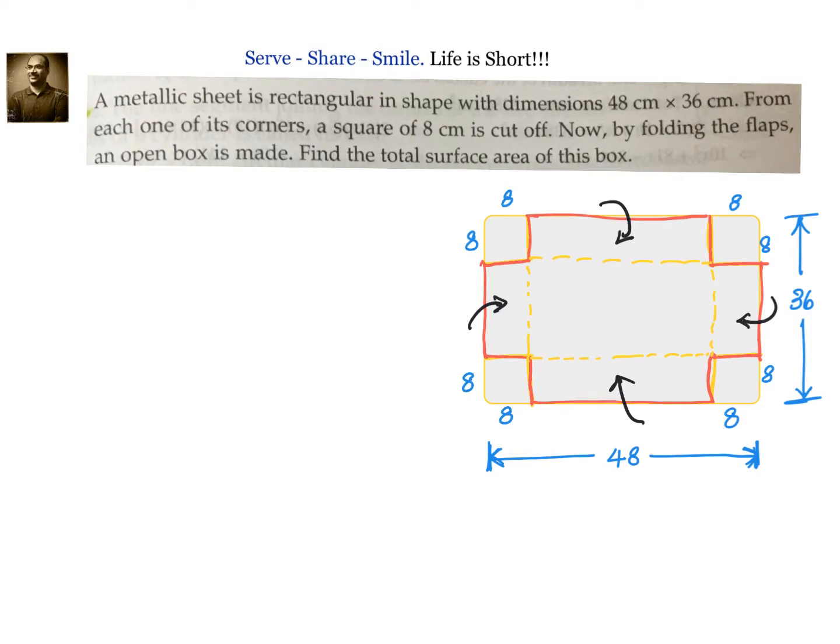What we will have is a cuboid with sides 32 because 48 minus 2 times 8 is 32. Similarly, here 36 minus 2 times 8 that is 20 and what will be the height, height will be equal to 8.